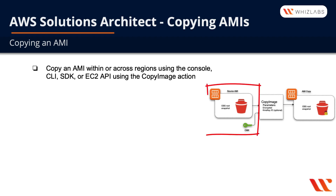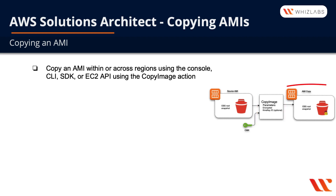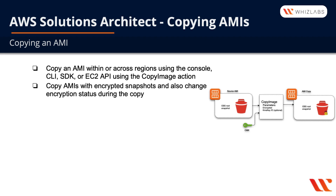We have a source AMI being copied using the copy image command with parameters of encrypted and a KMS key, which is optional, to create an AMI copy with the same EBS root volume snapshot. We can copy AMIs with encrypted snapshots and also change encryption status during the copy. Remember this for the exam — you might get scenarios describing copying AMIs with encrypted snapshots and changing the encryption status during the copy.